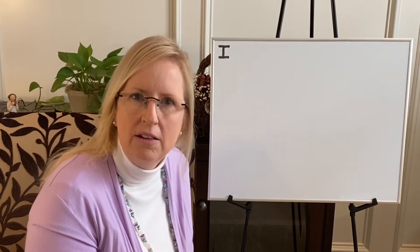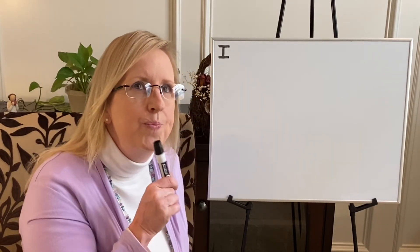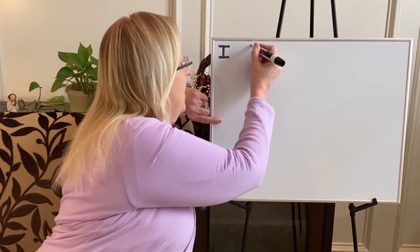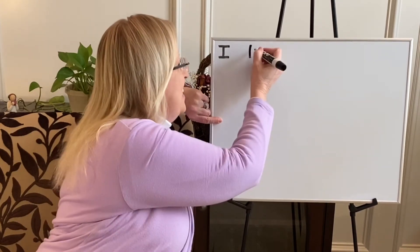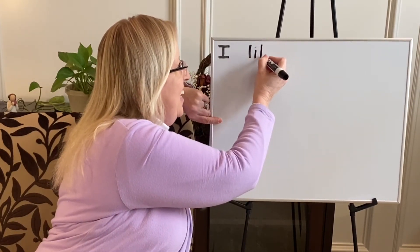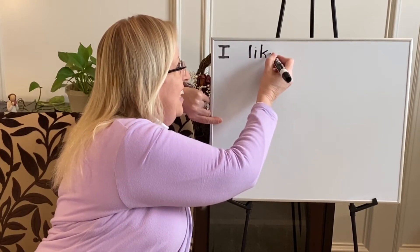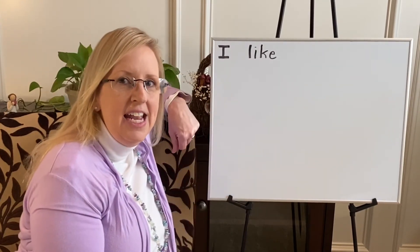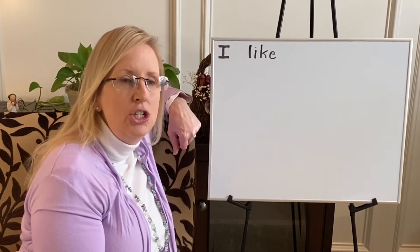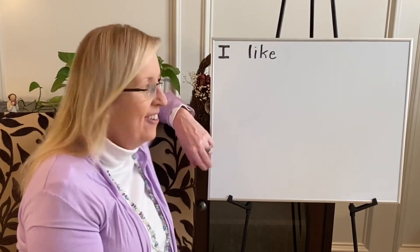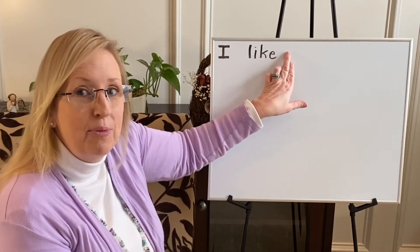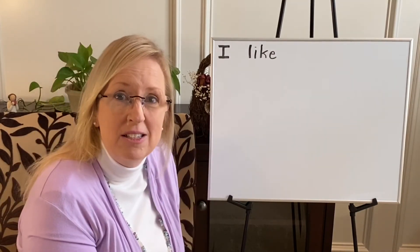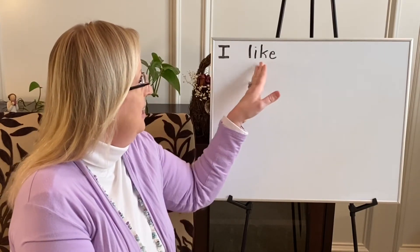Do you know how to spell the sight word like? Two fingers spaced between words. L-I-K-E. Like. I like. To. That's an easy sight word, you know that one. Another space to separate our words, because we know writing is very hard to read if you don't put in the spaces between the things that you're saying. I like to.